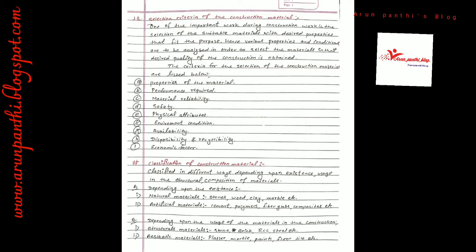The classification of construction material has two main parts. First is natural material, which includes stones, wood, clay, marble, etc.